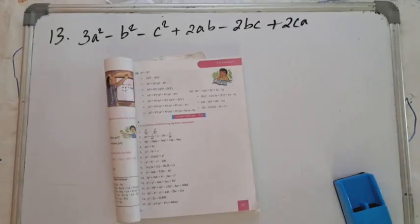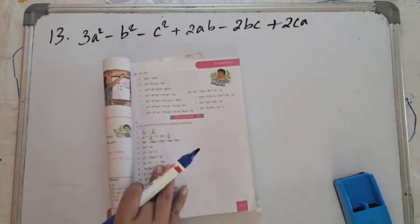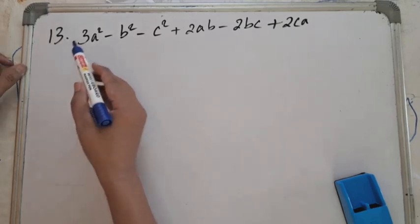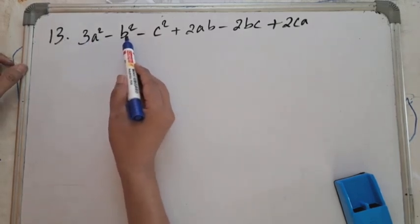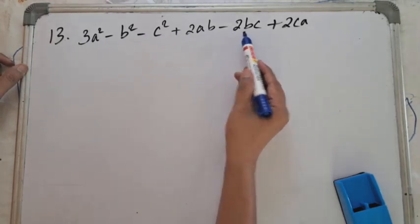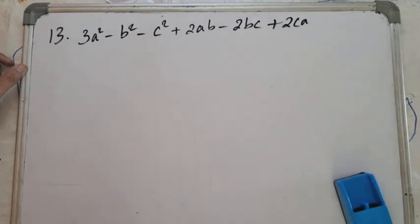Hello students, welcome back. We are doing factorization, chapter 8.2 from the class 9th book of West Bengal Board of Secondary Education. In our previous video we completed till question number 12, and today we'll start from question number 13. The expression is: 3a² - b² - c² + 2ab - 2bc + 2ca, and we are asked to factorize this.